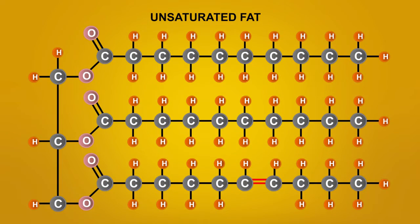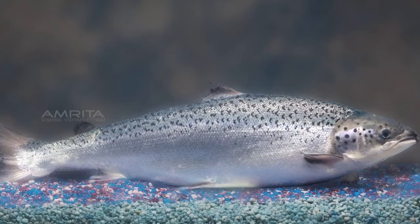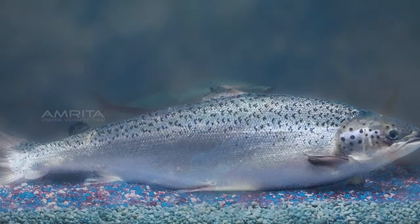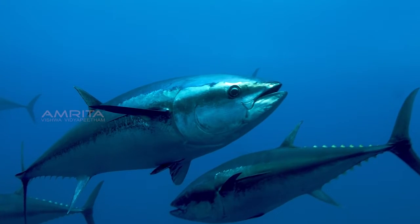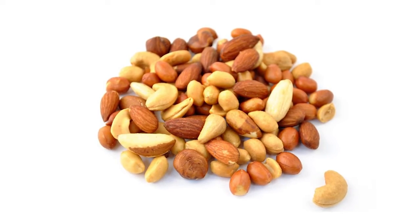Unsaturated fats contain double bonds within the carbon chain. Unsaturated fat is found in fish like salmon and tuna, as well as nuts and seeds.